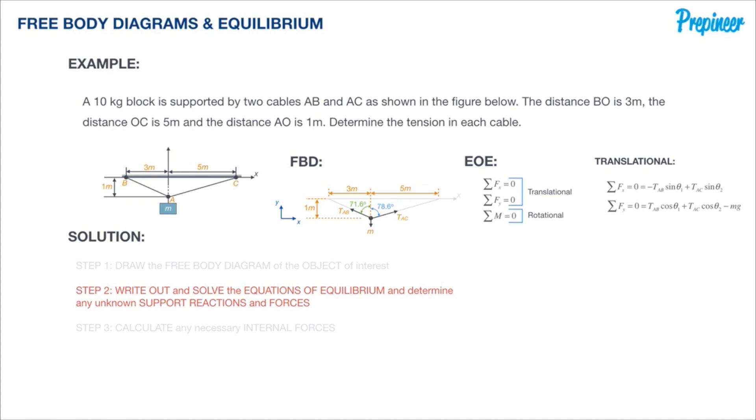With all of our equations defined—in this case we only have two—we have everything we need to solve. Can we even solve? The answer is we can. We have two equations and if you look at those equations, we have only two unknowns: T_AB and T_AC.